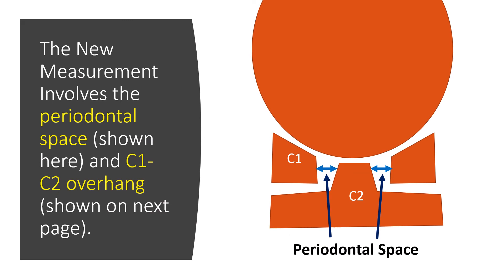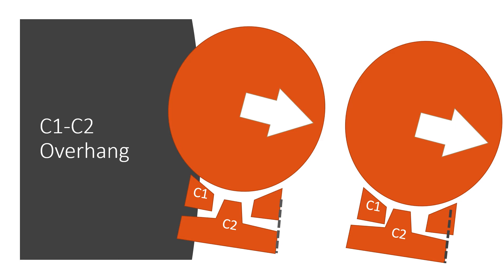The new measurement involves the periodontal space and C1-C2 overhang. The periodontal space is the distance between the C1 bone and the C2 bone on either side, and it should be identical or close to identical on left and right as you move — that means the alar ligament is doing its job. C1-C2 overhang is when you tilt your head to the right or left: does C1 move out too far versus C2? You can see that C1 is overhanging C2 when the person bends to one side — that's why we call it overhang.